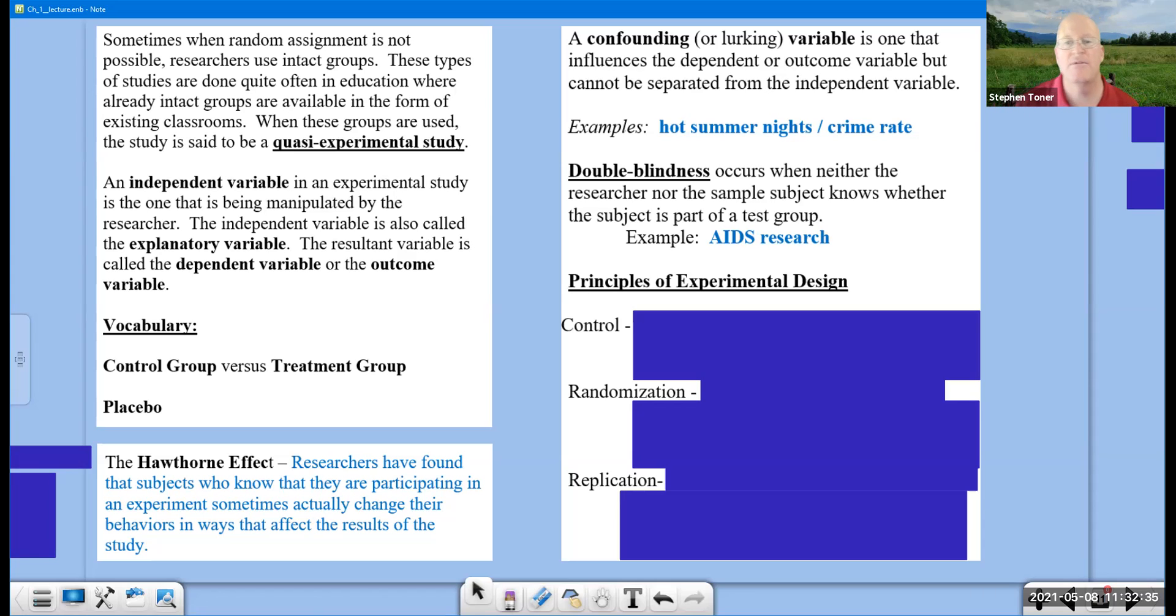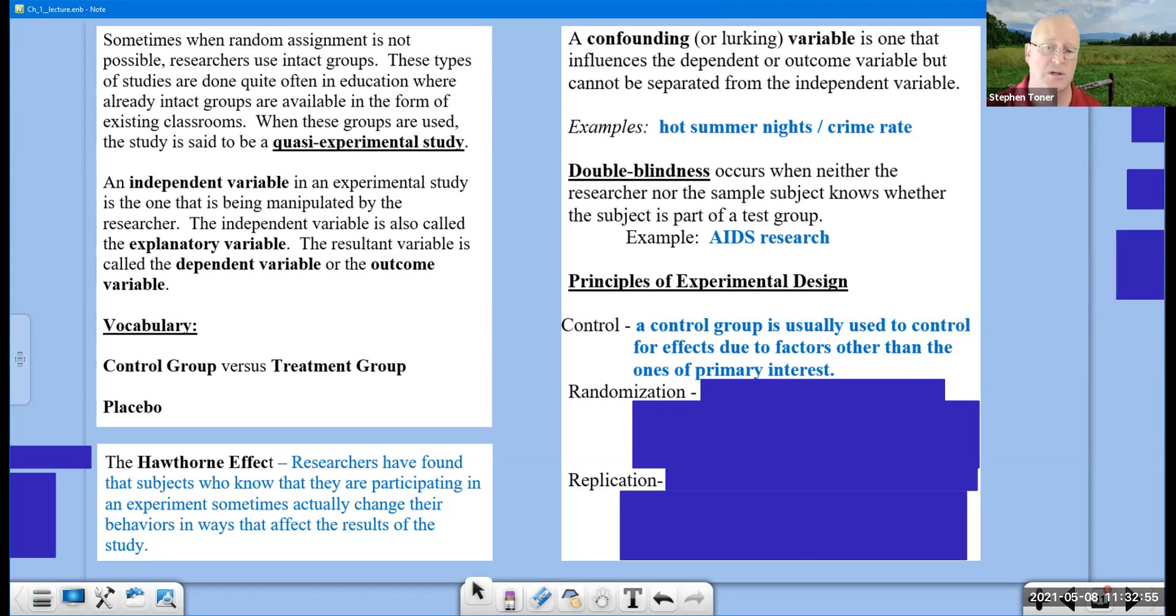Every time that you design an experiment, it should have these three components: control, randomization, and replication, if it is a well-designed survey. A control group is used to control for effects due to factors other than the ones of primary interest. We only want that one variable we're looking for to be the difference between the two groups.